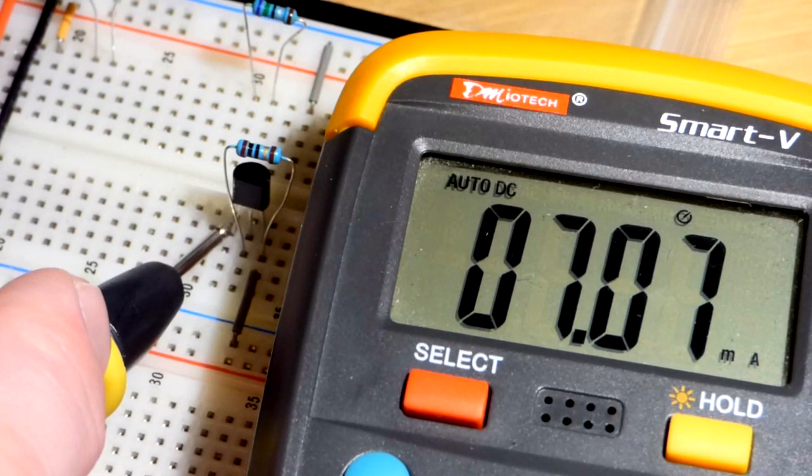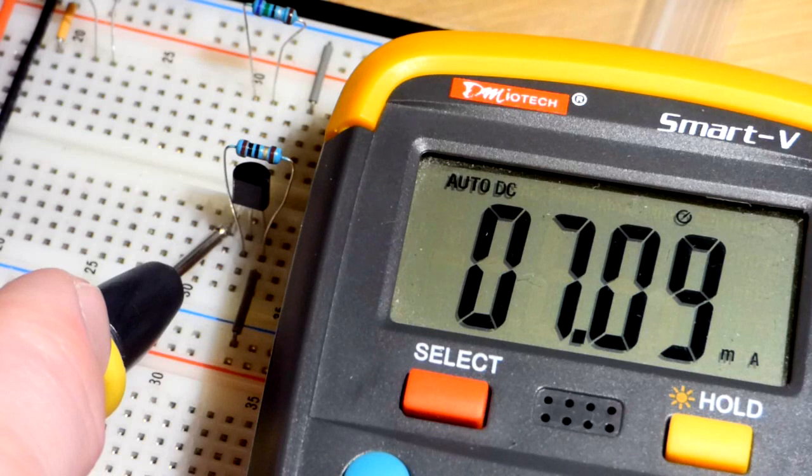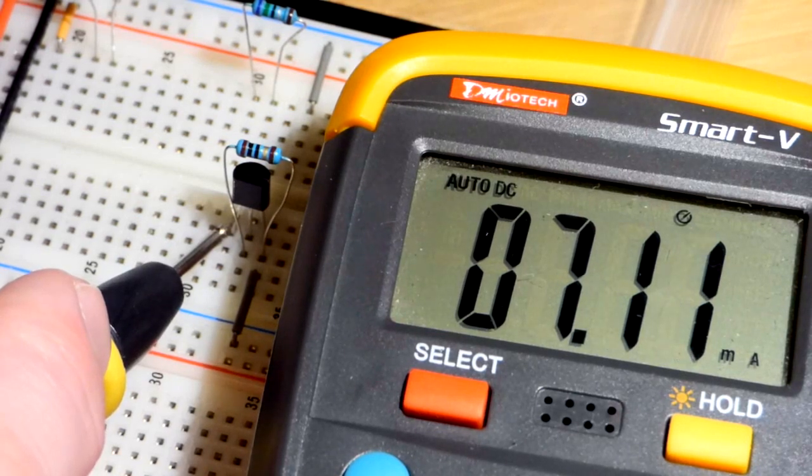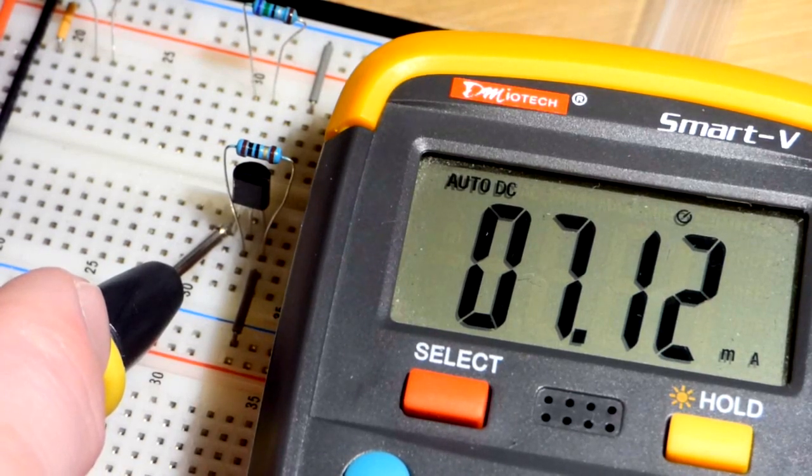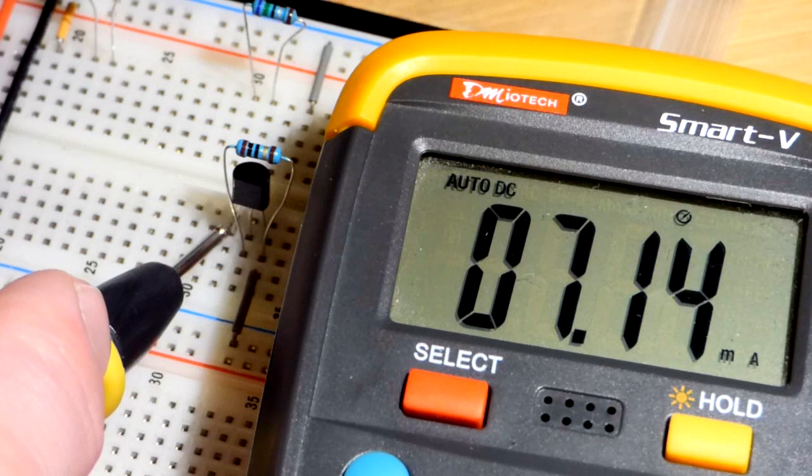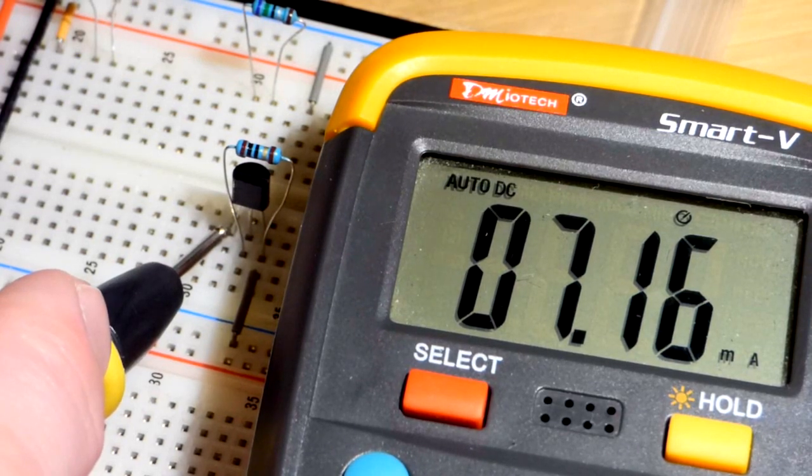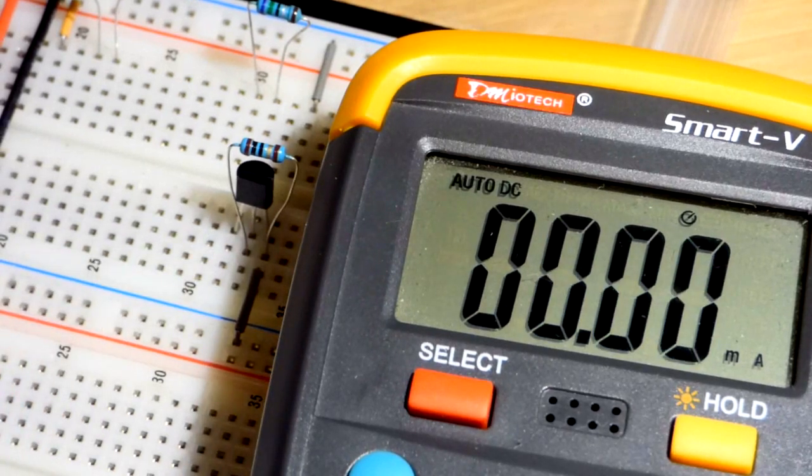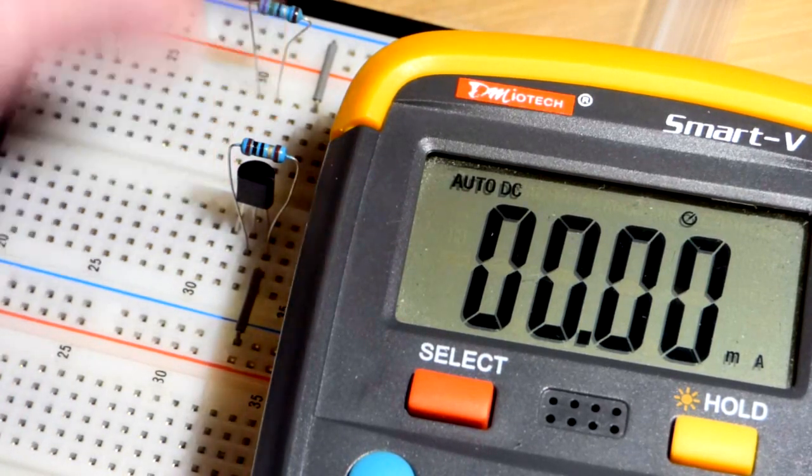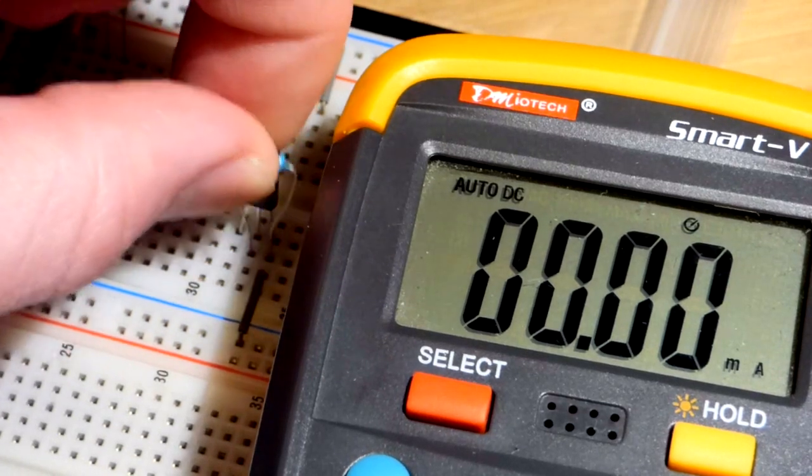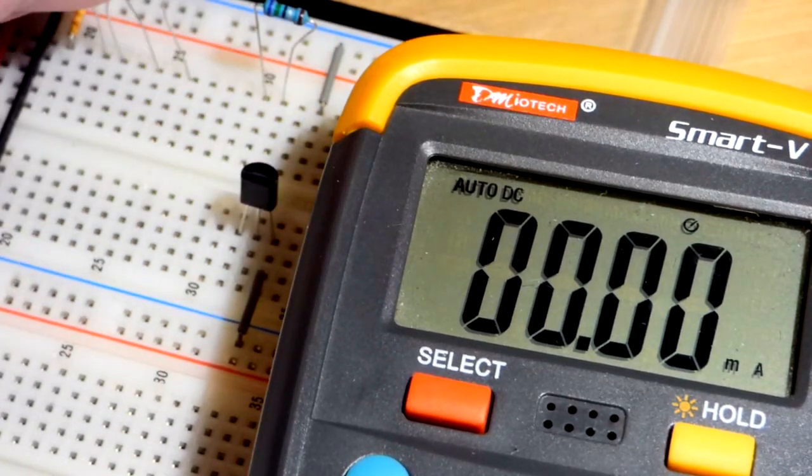There is going to be some more current though, as the component warms up. So it'll level off at some point. But that's just something to be aware of. Current's going to go up slightly. So this might be an okay amount of current. I want a little bit more though. You should limit it to 10 milliamps of current. So let's yank that resistor out.